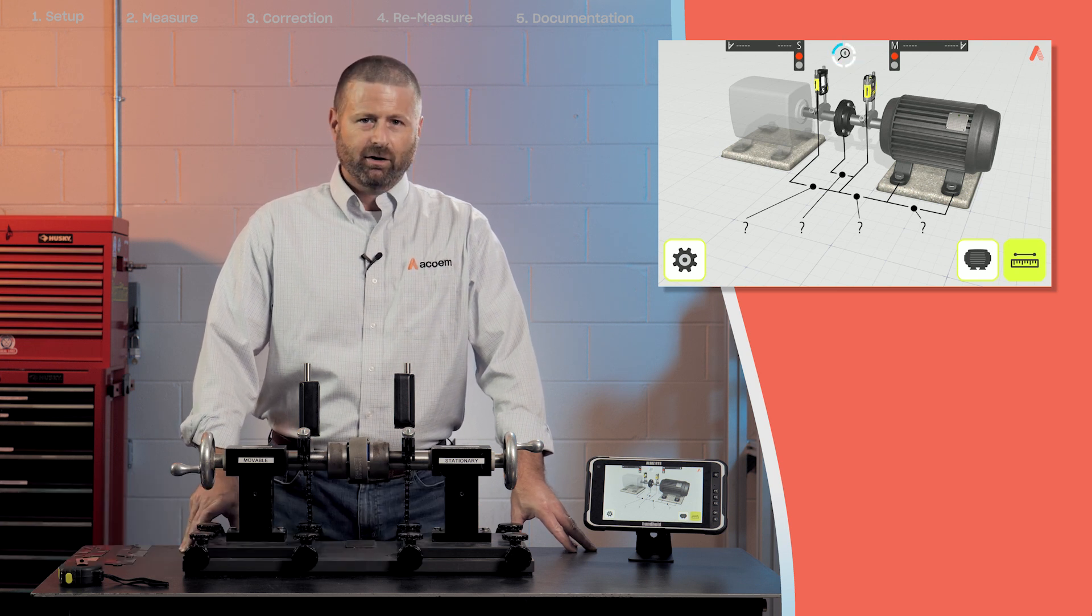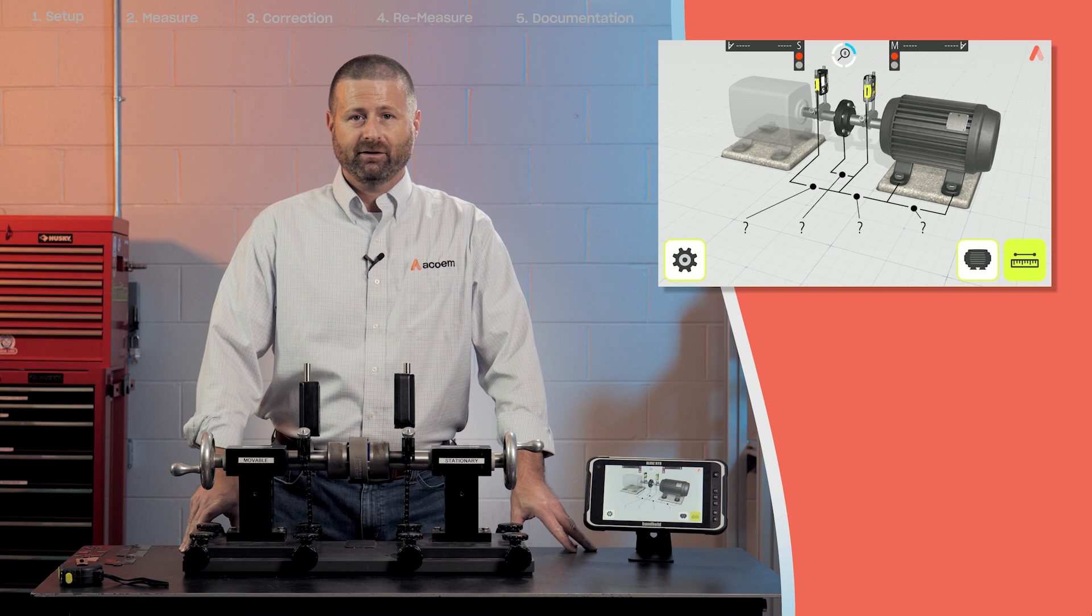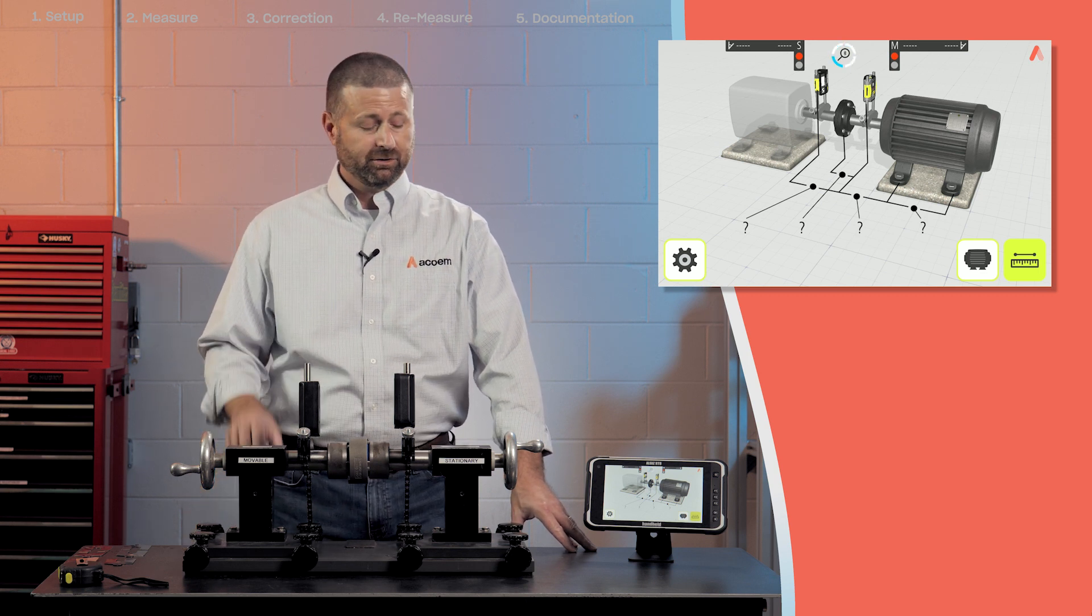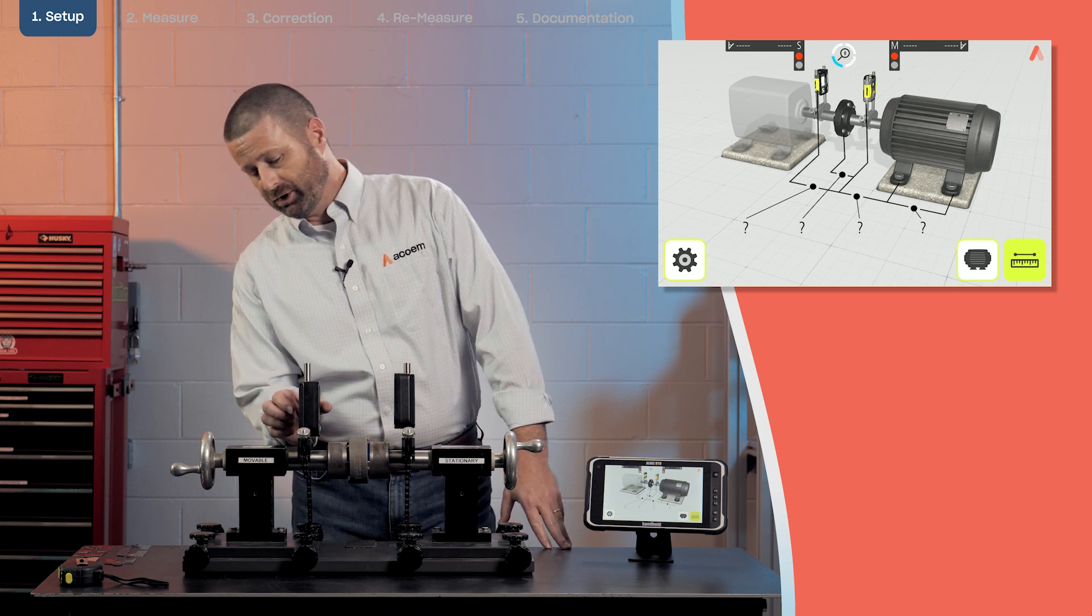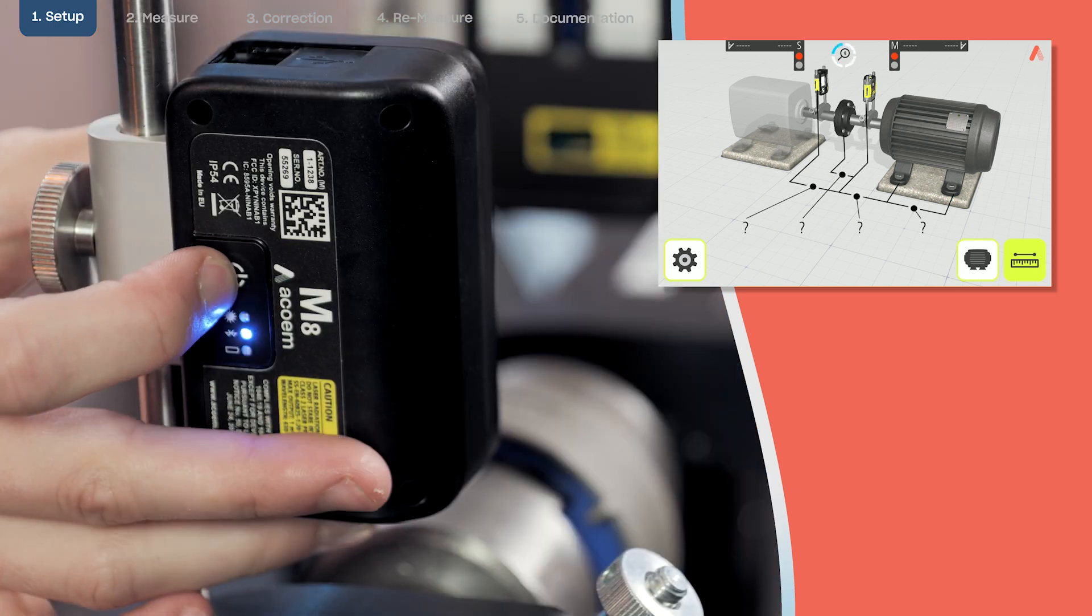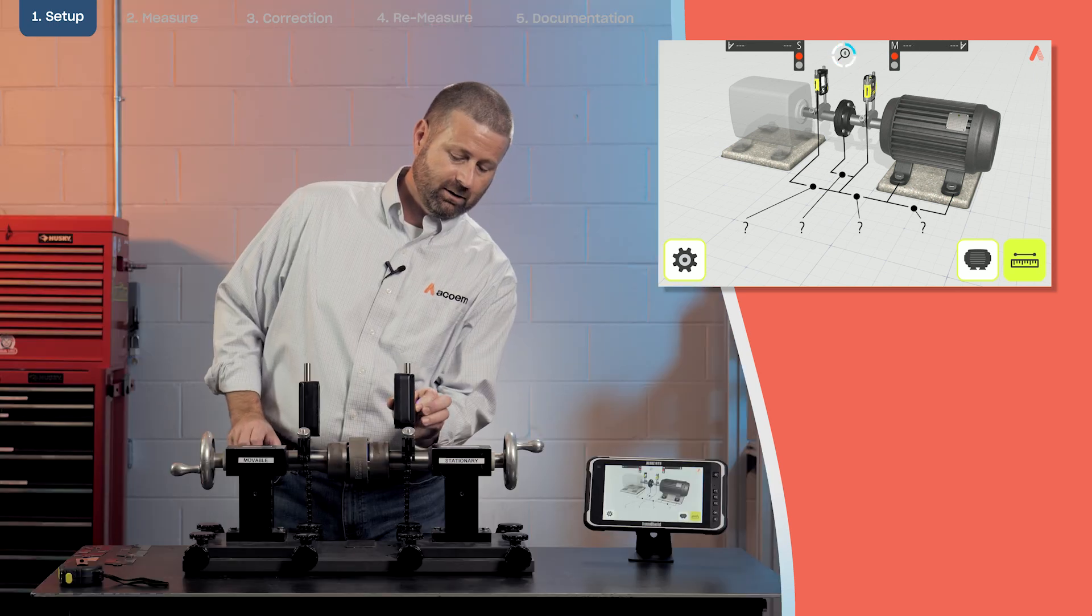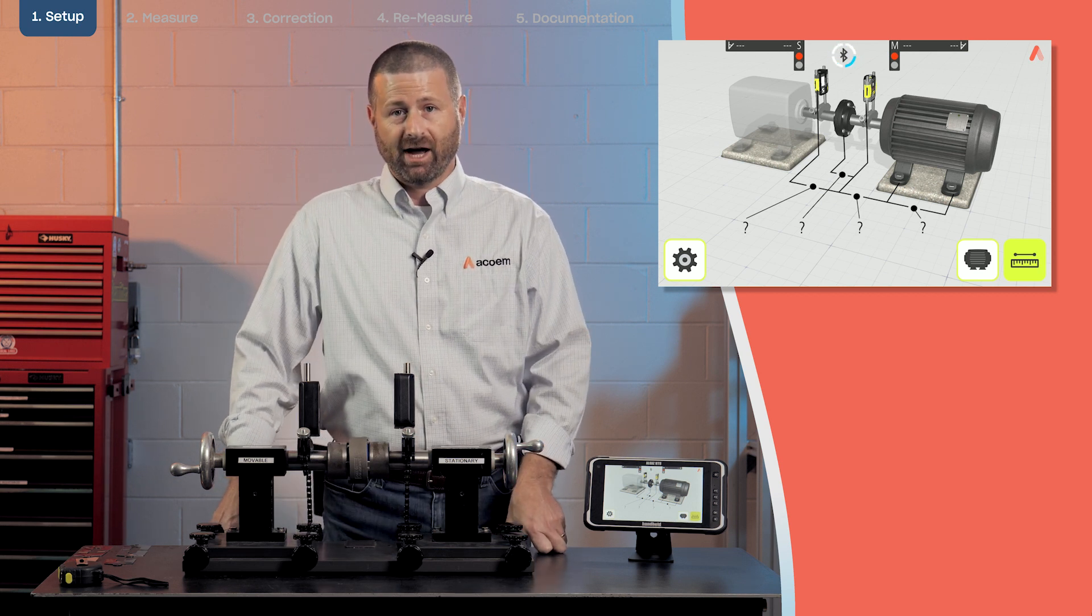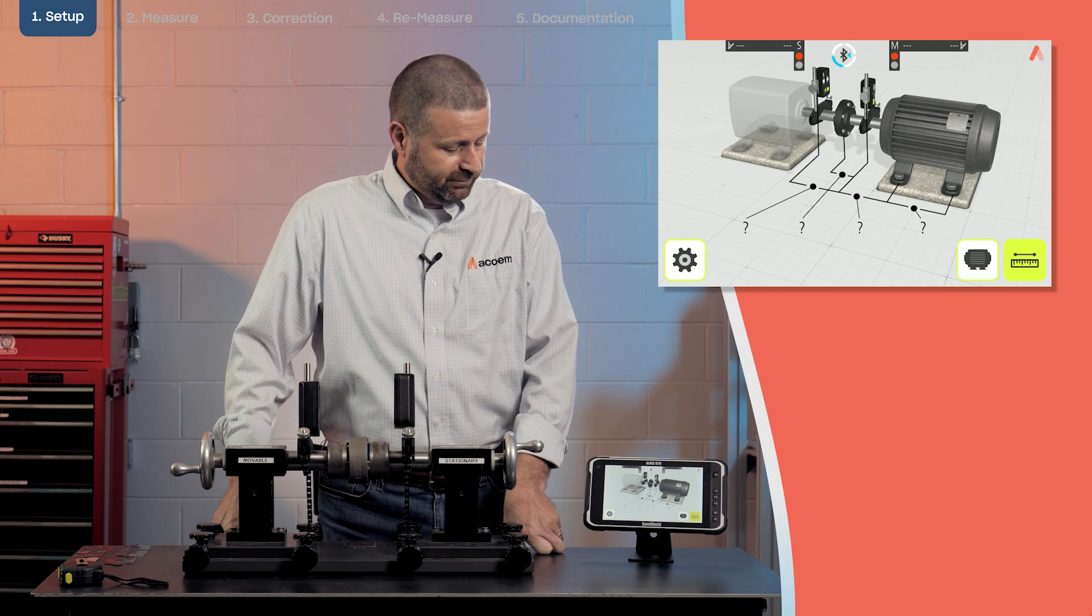The AT100 is tablet or app based and communicates with the sensors through a Bluetooth connection. The first thing we're going to do is turn on our sensors at the same time we open the horizontal shaft alignment app on the display unit.